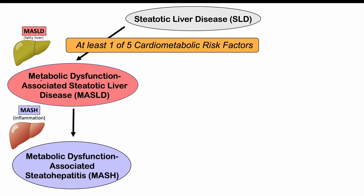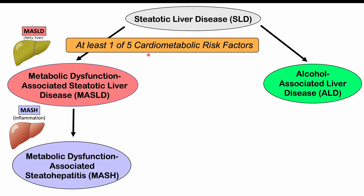In order to have the equivalent of NAFLD — now called MASLD — we need at least one of those five cardiometabolic risk factors. Alcohol-associated liver disease, or ALD, still falls under the umbrella of steatotic liver disease, but it applies to patients who are heavy consumers of alcohol and have no cardiometabolic risk factors at all — so it is purely alcohol-related.